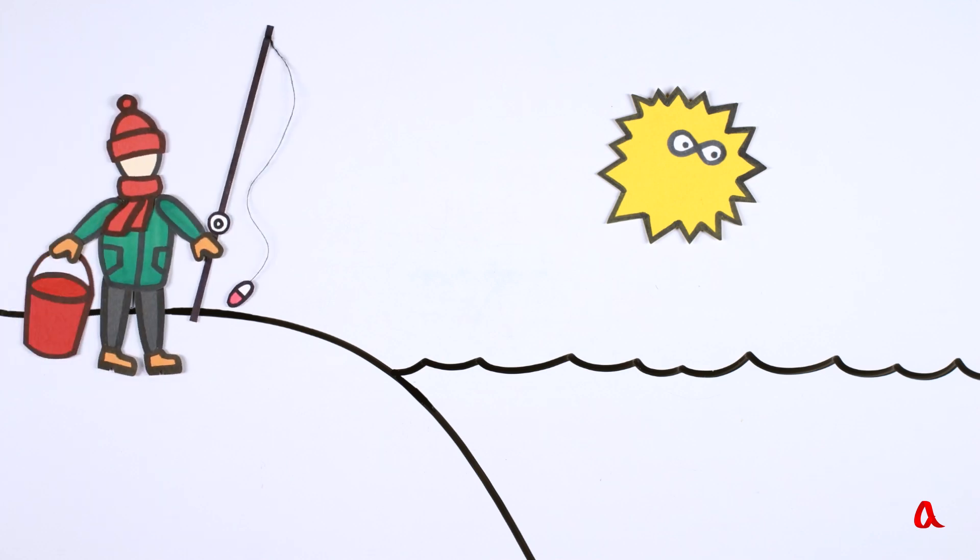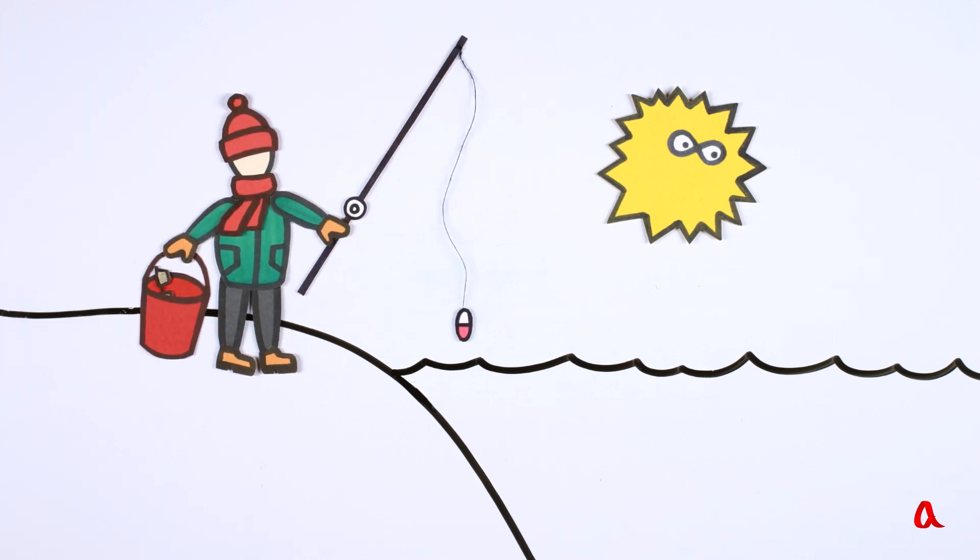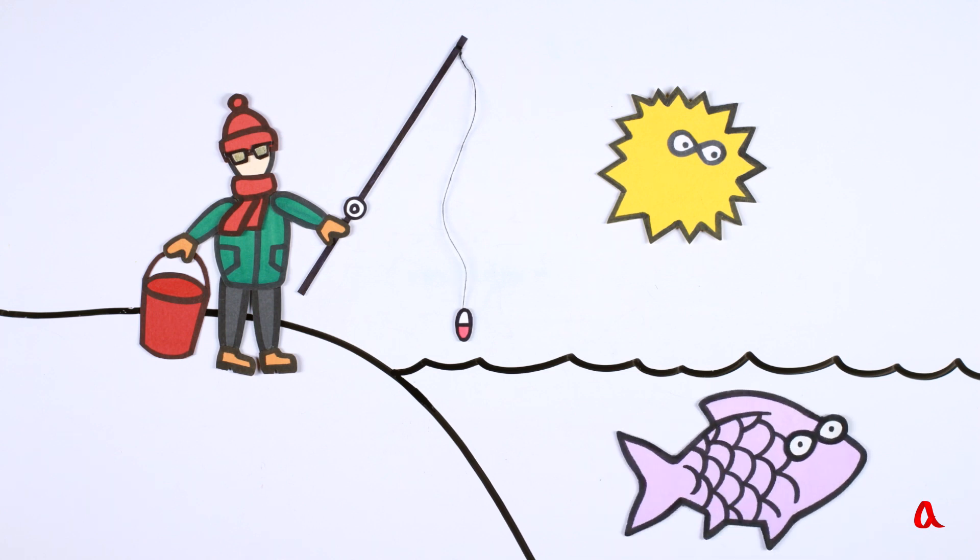Now we understand why bait shops sell polarizing glasses. They reduce glare and allow fishermen to see what is happening under water.